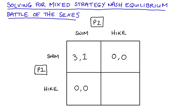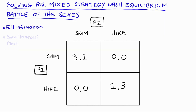Player two doesn't really like swimming but likes doing something with player one. Player two really likes hiking though, so if both players play hike, player one gets an outcome of one — they don't really like hiking but they like doing things with player two — and player two gets the higher outcome of three. Our game is constructed under full information, everything is common knowledge, our players choose simultaneously, and there is no repetition of the interaction.